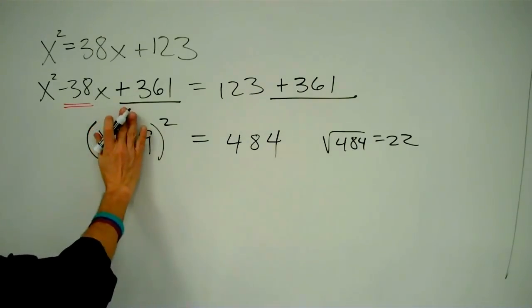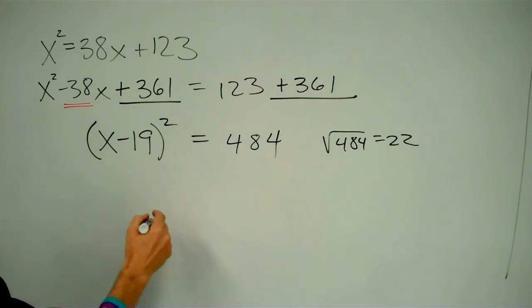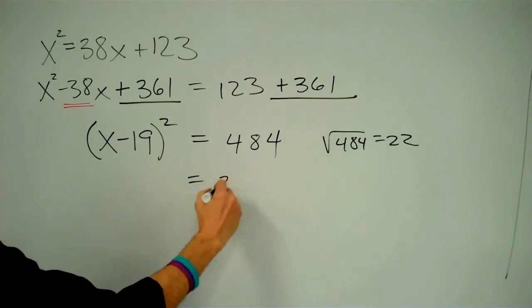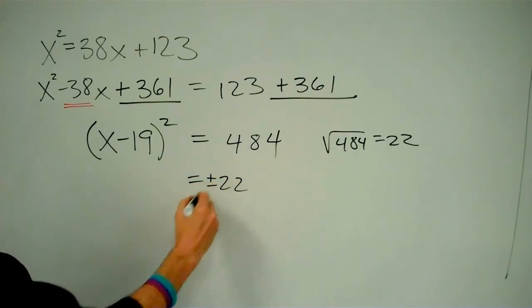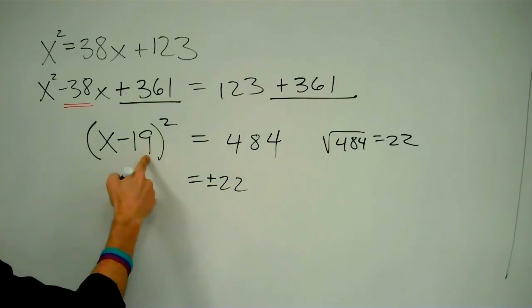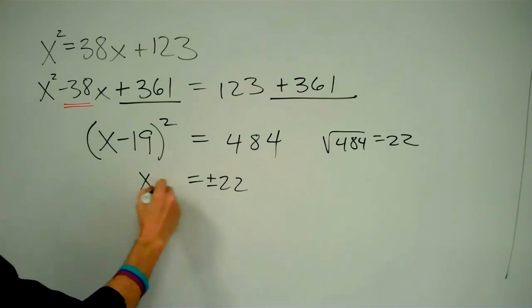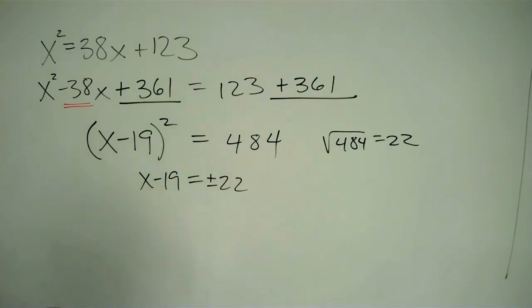So what that means is, I have something squared equals 484, and that's going to be either 22 or negative 22. Whatever's inside of here has to be 22 or negative 22. So I'll say x minus 19 is either positive 22 or negative 22.